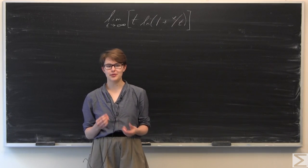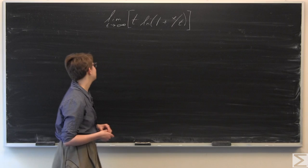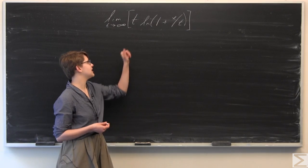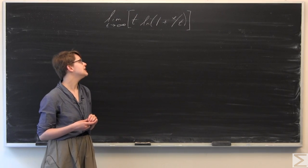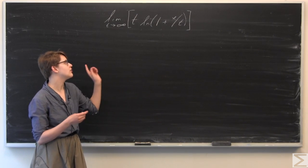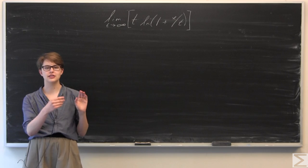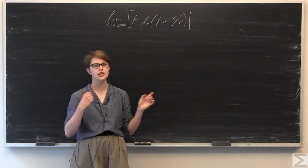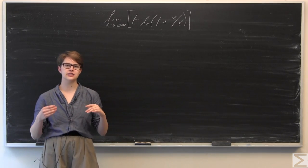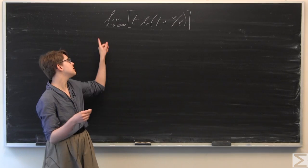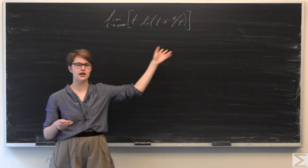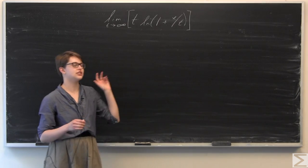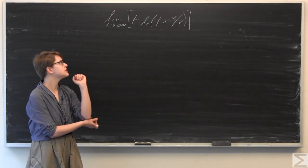This week's problem of the week asks you to evaluate the limit as t goes to infinity of t times ln of the quantity 1 plus x over t. It's important to note that our dependence is on t — we're evaluating the limit as t goes to infinity, not as x goes to infinity. x is just a constant in this case.